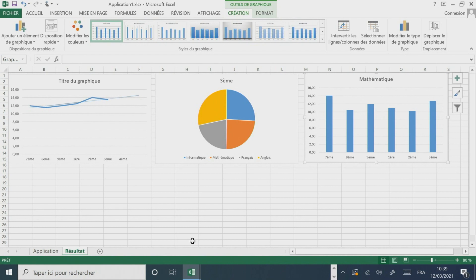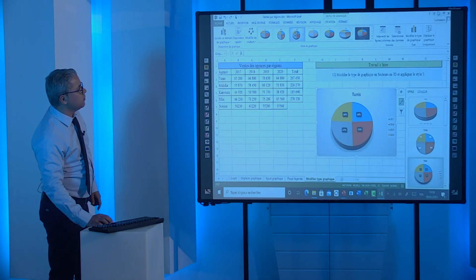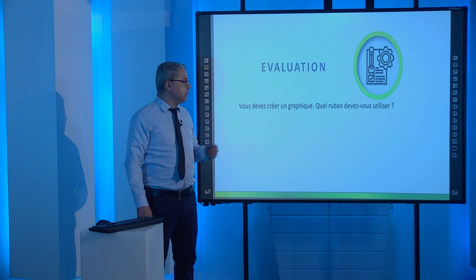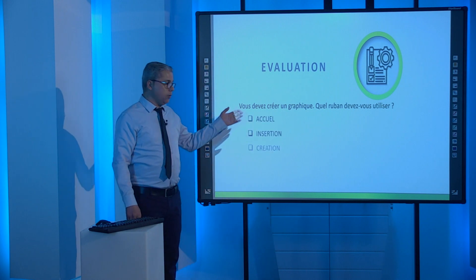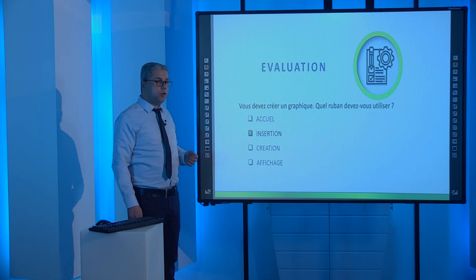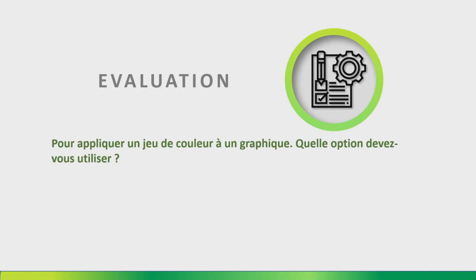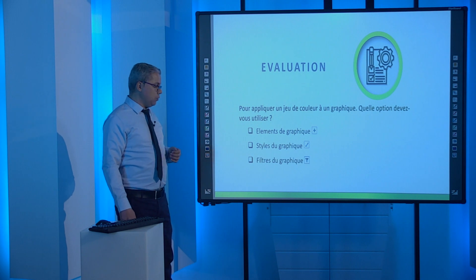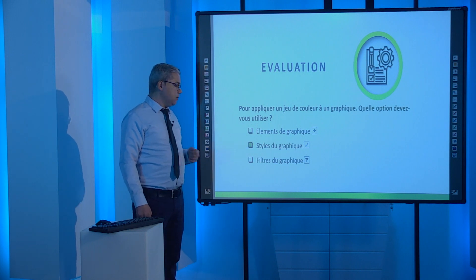Passons maintenant à l'évaluation suivante. Pour créer un graphique, quel ruban devez-vous utiliser ? Accueil, Insertion, Création ou Affichage ? Pour créer un graphique, on doit utiliser le ruban Insertion. Maintenant, pour appliquer un jeu de couleurs, quelle option devez-vous utiliser ? Élément du graphique, Style du graphique, ou Filtre du graphique ? Pour appliquer un jeu de couleurs, il faut utiliser Style du graphique.